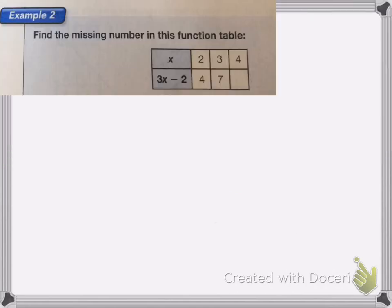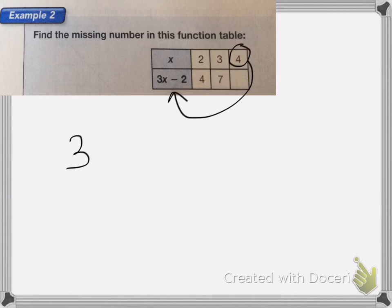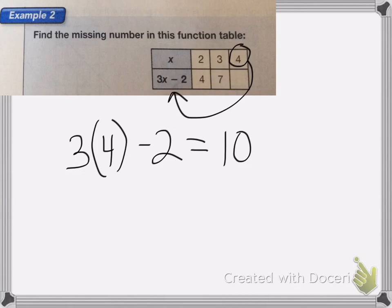On this one, find the missing number in this function table. When x is 2, the bottom is equal to 4. When x is 3, the bottom is equal to 7. I need to figure out when x is 4. So I'm going to put x=4 into this equation: 3 times 4 minus 2. 3 times 4 is 12, minus 2 is equal to 10. So 10 is my missing number.